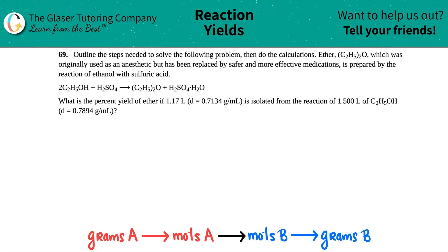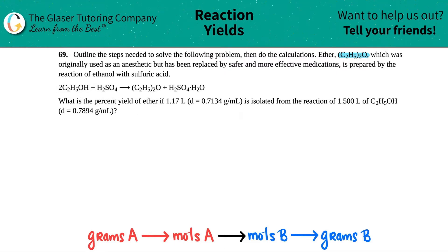Problem 69: outline the steps needed to solve the following problem, then do the calculations. Ether, which is C2H5-2O, was originally used as an anesthetic but has been replaced by safer and more effective medications. It is prepared by the reaction of ethanol with sulfuric acid. The question is: what is the percent yield of ether if 1.17 liters, with a density of 0.7134 grams per mL, is isolated from the reaction of 1.500 liters of ethanol?